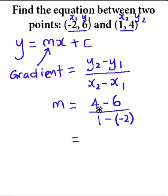If we evaluate: 4 - 6 is -2 over 1 - (-2) becomes 1 + 2, which is 3. So the gradient of the straight line is -2/3.